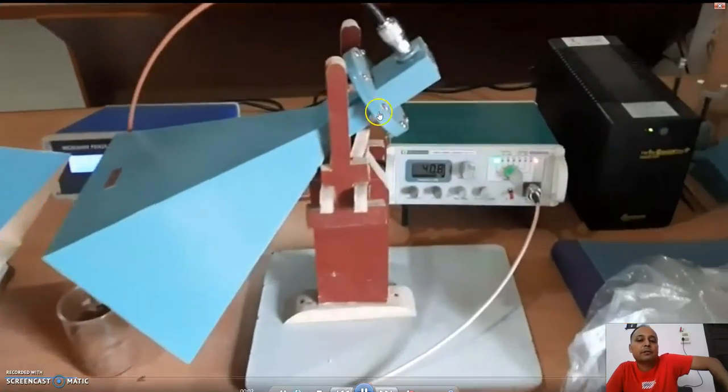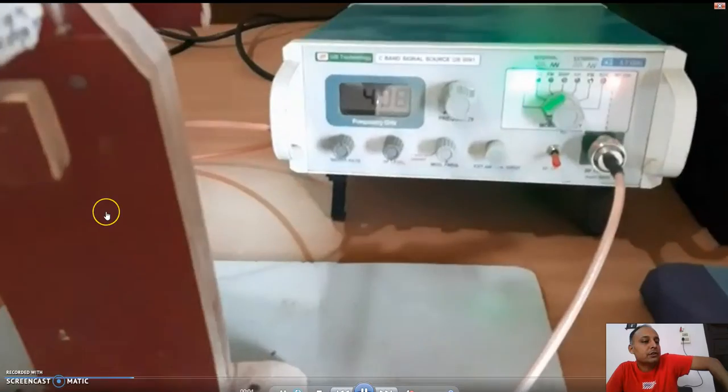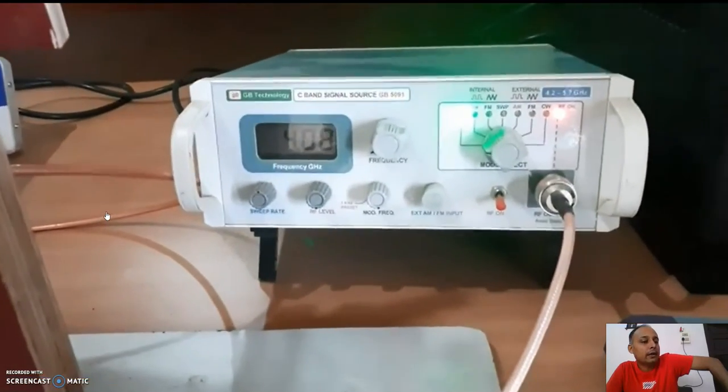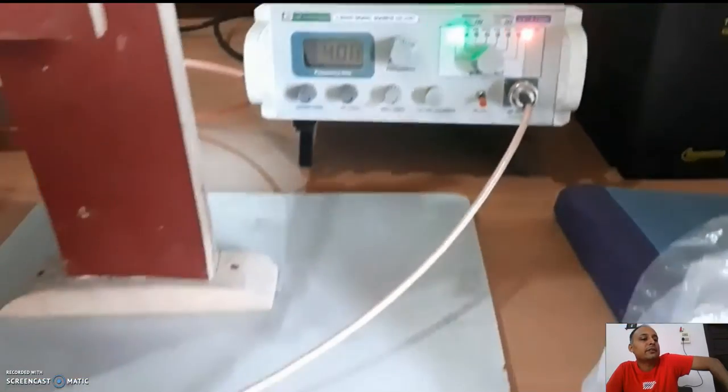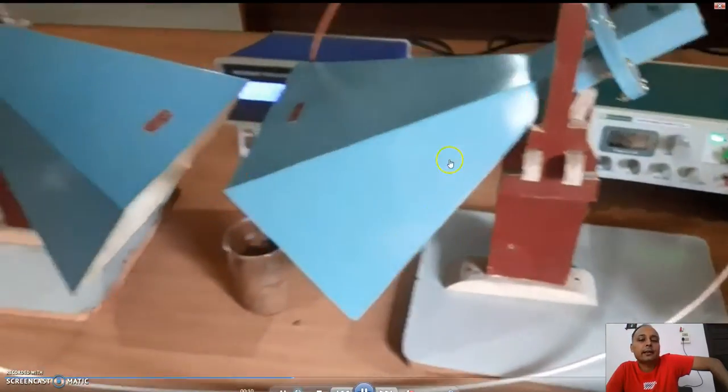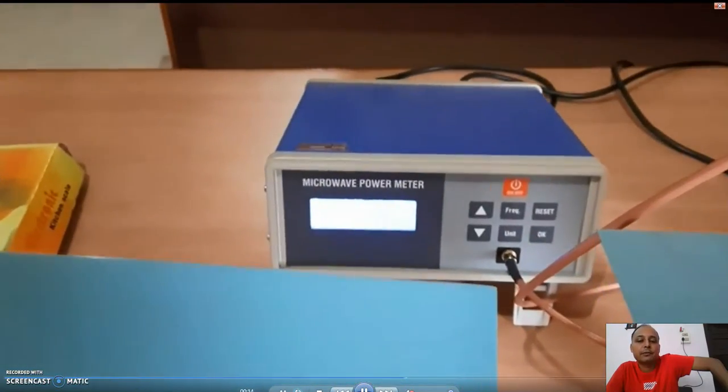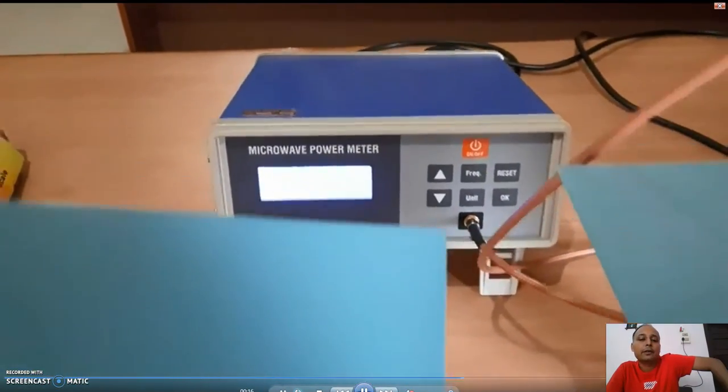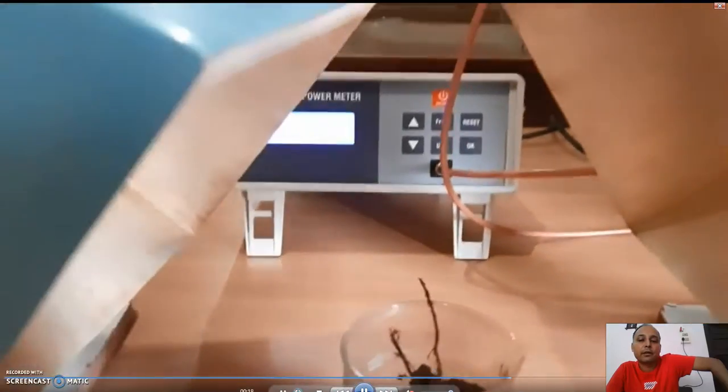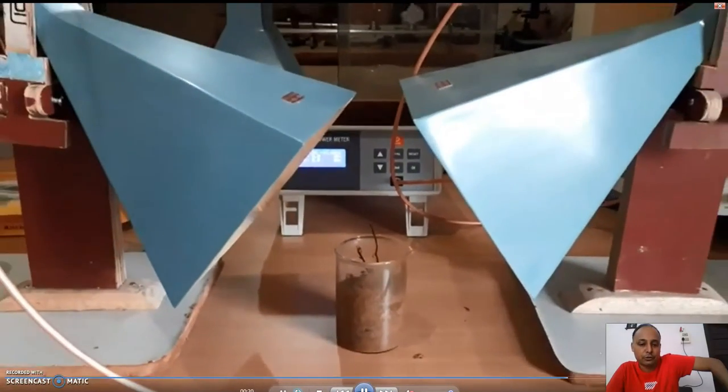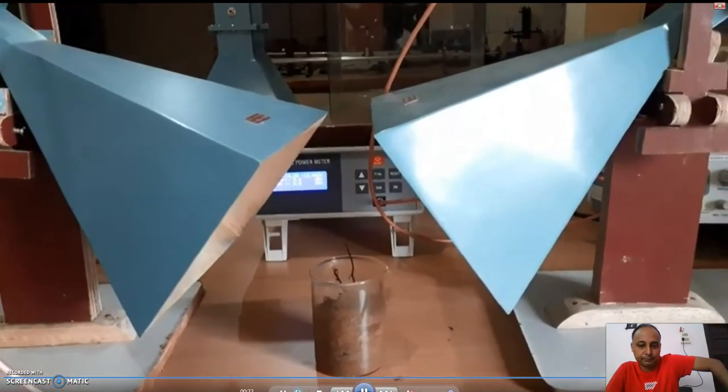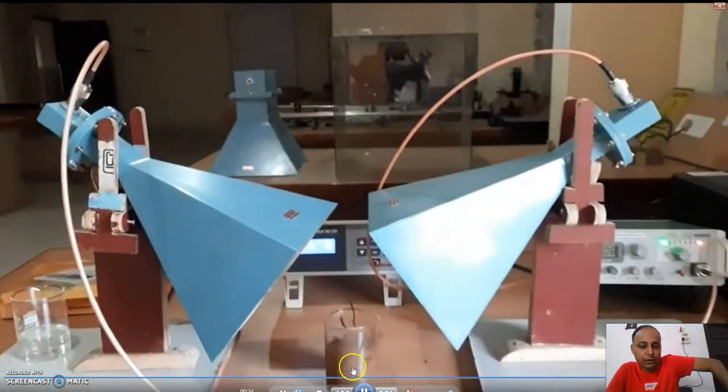But this particular setup has the facility to adjust the look angle of the antennas as can be seen. This angle can be changed for both the transmitter and receiver. Accordingly, we can decide the best look angle for measuring soil moisture using this setup.